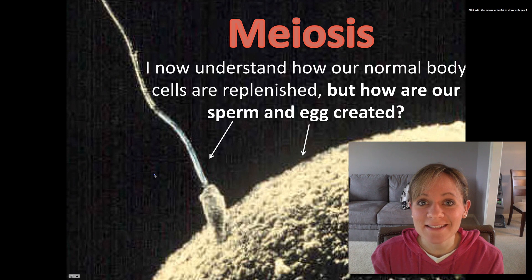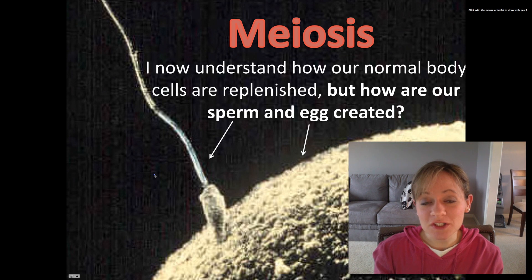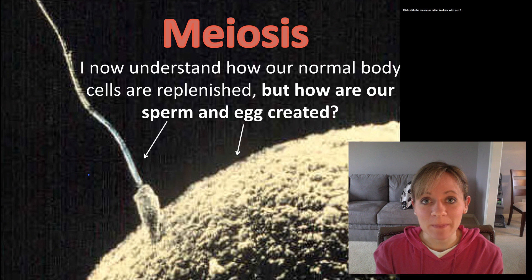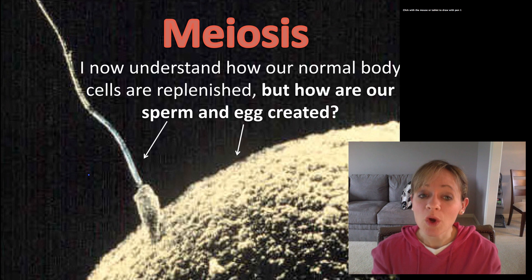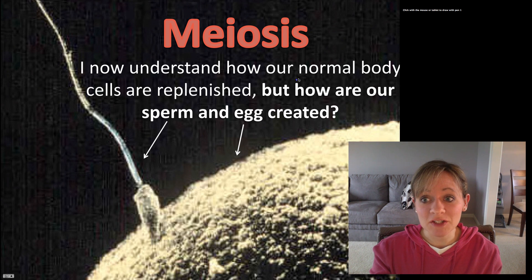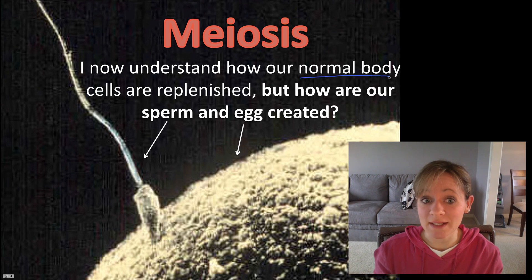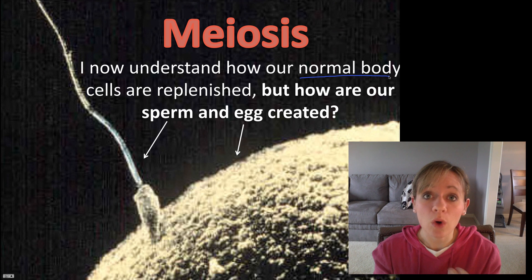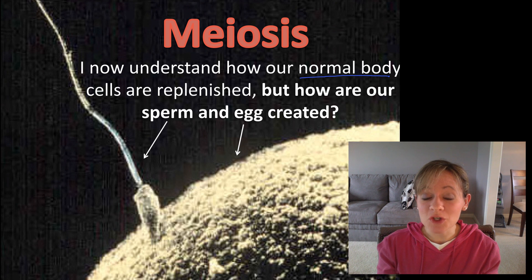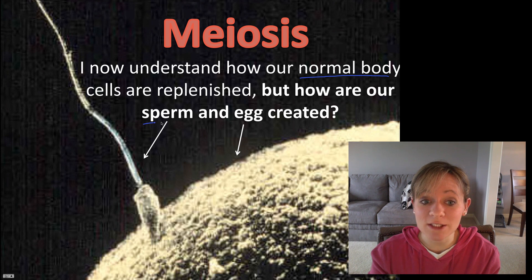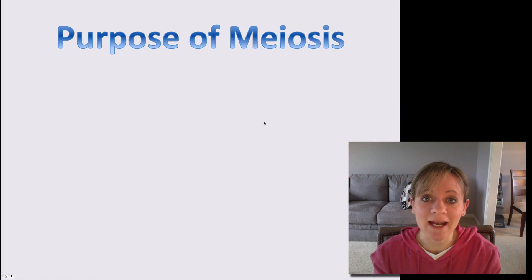Hi class, welcome to this screencast on meiosis. We just finished up learning about the cell cycle and mitosis, and a lot of what we learned we're going to have to remember because it applies similarly to meiosis. We now understand based on mitosis how our normal body cells are replenished for repair or when they're damaged, but how are our sperm and our egg created? We're going to look at a totally different process called meiosis, and meiosis creates sperm and in females it creates eggs.